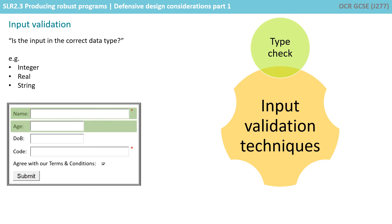The first is a type check. Was data entered of the correct data type? For example, if a program is expecting a number but a character is input instead, it will likely crash.